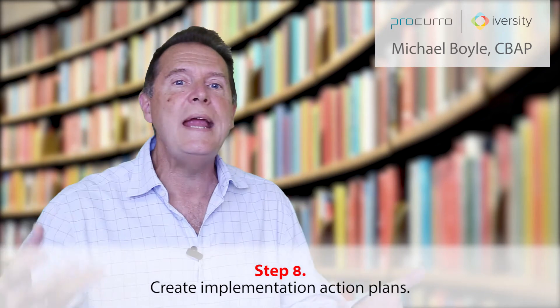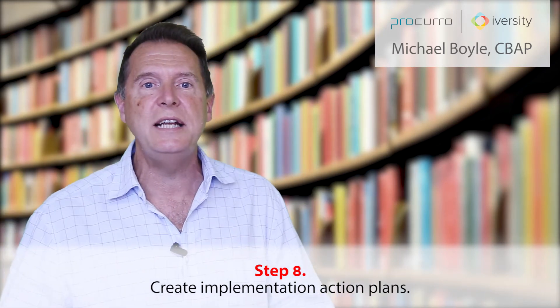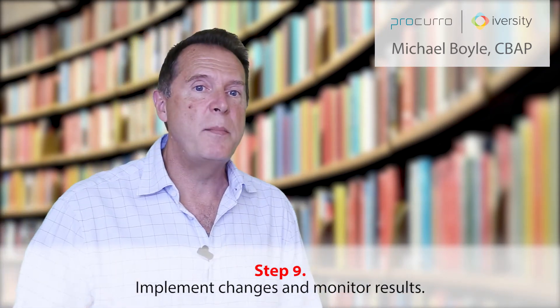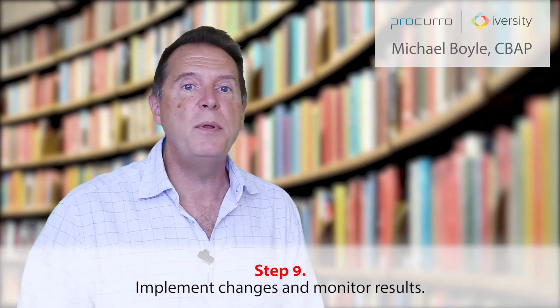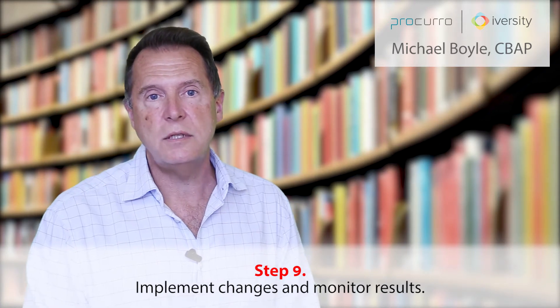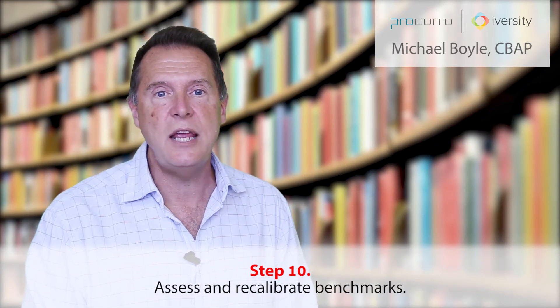Number seven would be establishing new goals for the process or operations — this sounds like continual process improvement. Step number eight would be to create an implementation action plan. Step number nine, implement changes and monitor results. Step number ten, assess and recalibrate the benchmark.